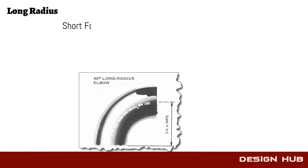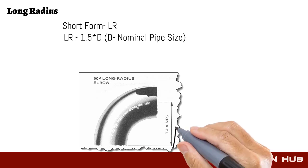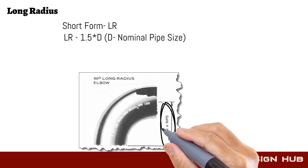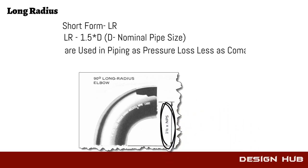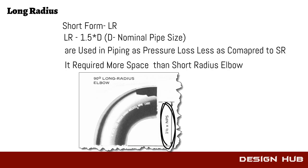Long radius elbow, its short form is LR. Long radius is basically 1.5D, where D is the nominal pipe size. This type of elbow is mostly used where space is enough and pressure drop constraints have to be maintained.